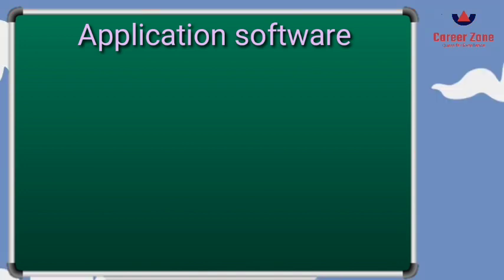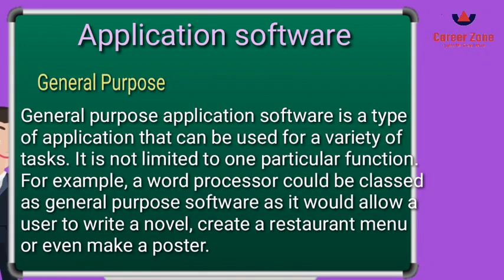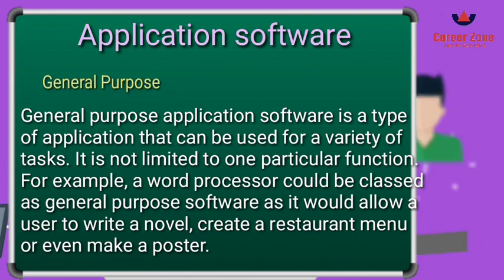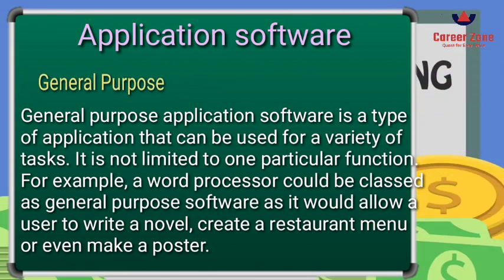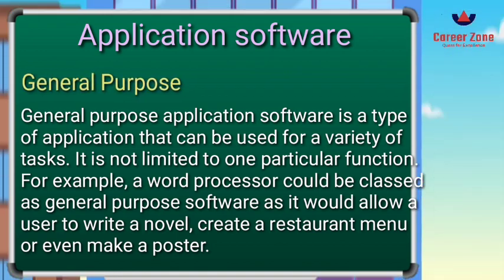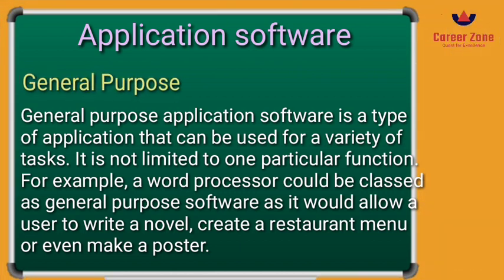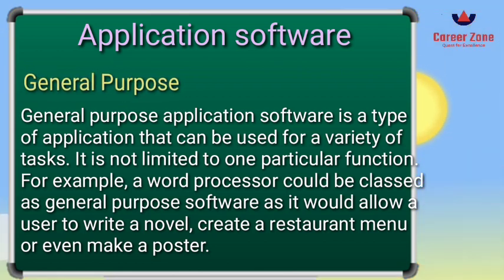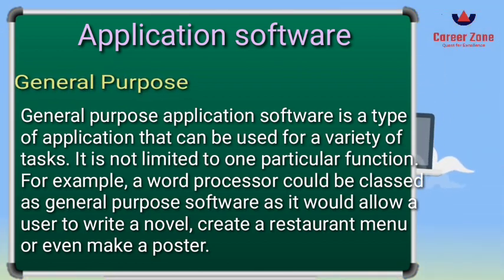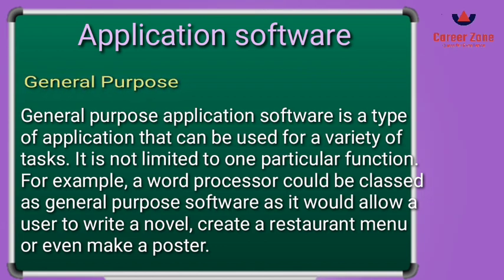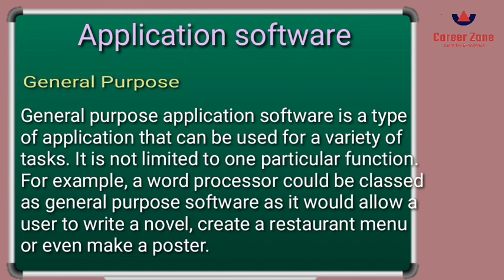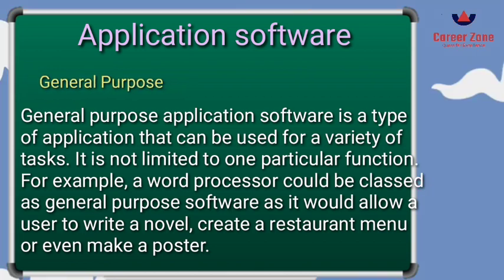The next part is application software, which is further categorized into two types: general purpose and special purpose. General purpose software helps you perform a variety of tasks. For example, a word processor, PowerPoint, or Excel — Word is helpful for creating and writing documents, presentation software for designing presentations, and Excel for calculations. These are all categorized under general purpose application software.